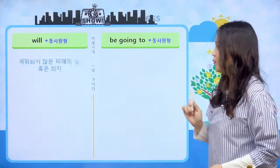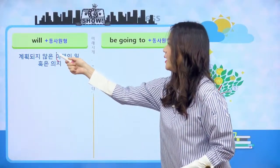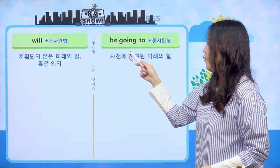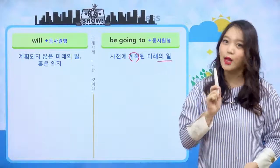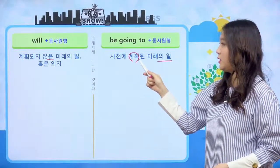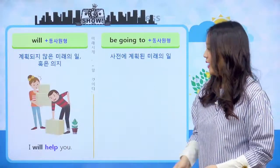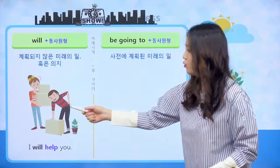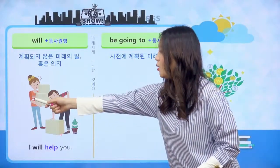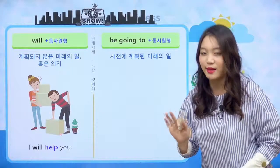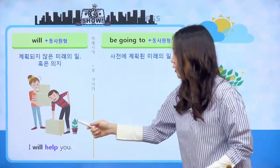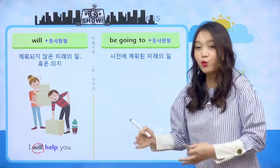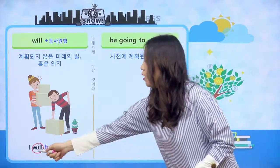차이점이 뭐냐고요? will은 계획되지 않은 미래의 일이나 혹은 의지를 나타낼 때 사용합니다. 그리고 be going to는 사전에 미리 계획된 미래의 일을 말하고자 할 때 사용해요. 예를 들어, 이 여자가 지나가면서 원래는 도와주려고 계획하진 않았지만 당장 보니까 도와줘야 될 것 같아서 'I'll help you'라고 이야기를 해요. 계획되진 않았지만 내가 도와줄게라고 이야기하고 있죠. 그래서 will을 사용했어요.